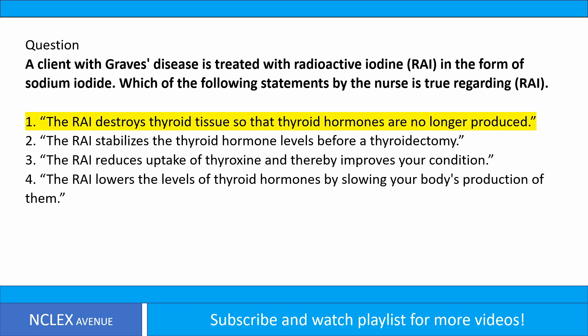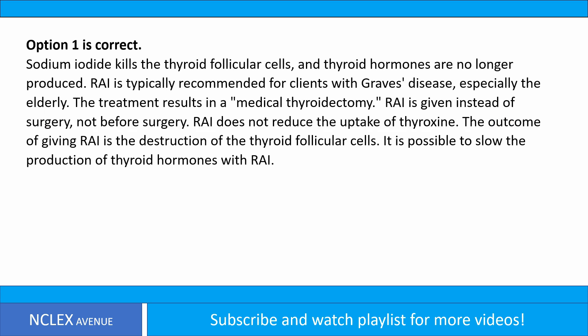Option 1 is correct. Sodium iodide kills the thyroid follicular cells and thyroid hormones are no longer produced. RAI is typically recommended for clients with Graves' disease, especially the elderly. The treatment results in a medical thyroidectomy. RAI is given instead of surgery, not before surgery. RAI does not reduce the uptake of thyroxine. The outcome of giving RAI is the destruction of the thyroid follicular cells. It is not accurate to say RAI only slows production of thyroid hormones.